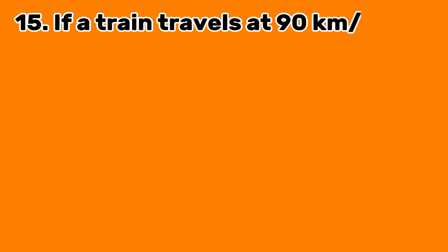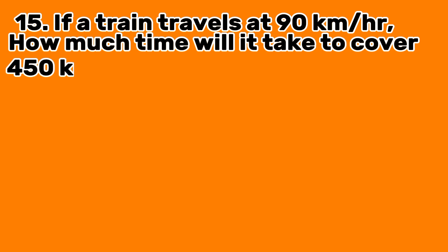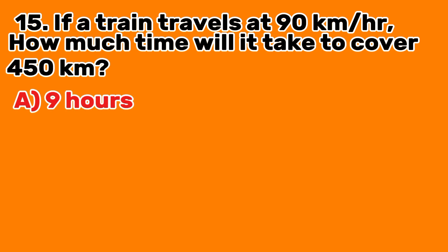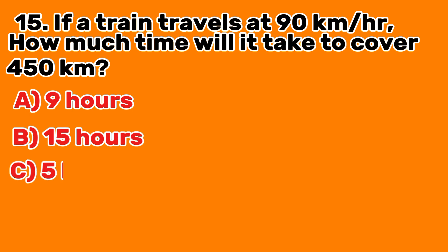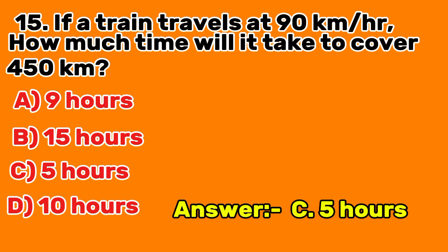Question 15: If a train travels at 90 kilometers per hour, how much time will it take to cover 450 kilometers? A. 9 hours. B. 15 hours. C. 5 hours. D. 10 hours. Answer C: 5 hours.